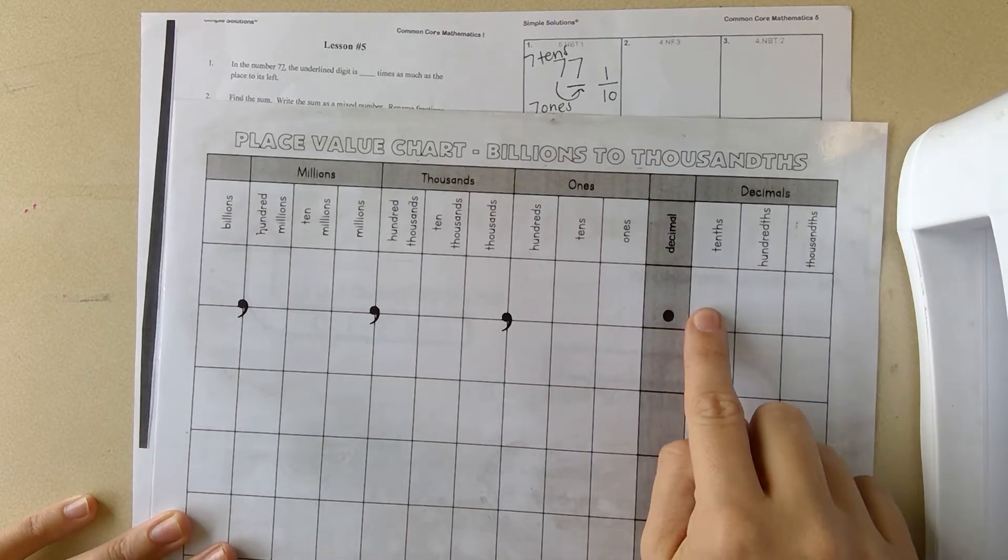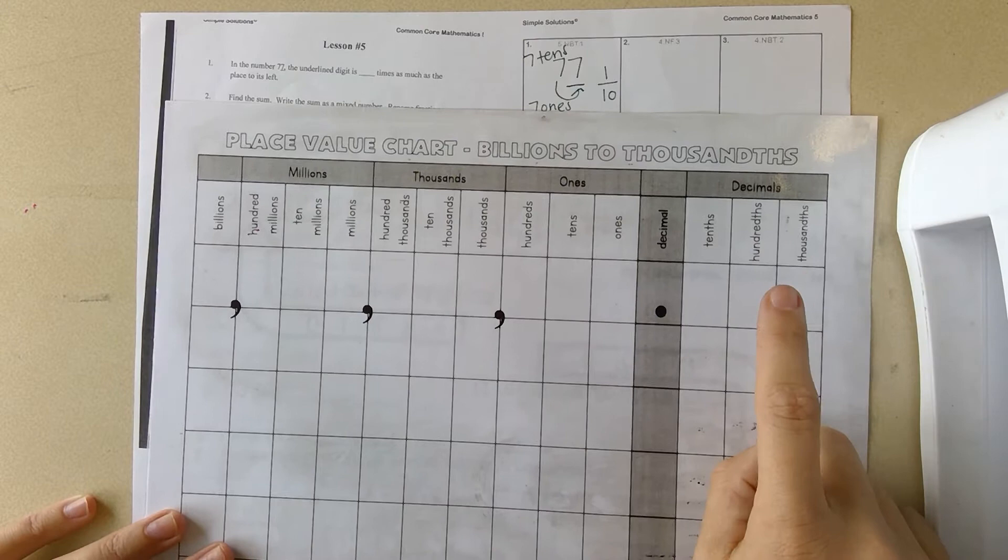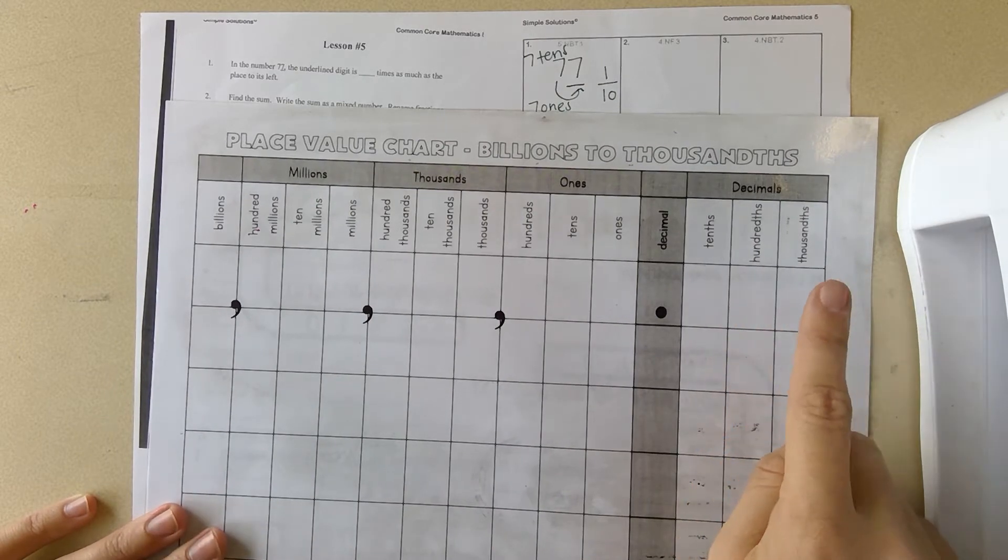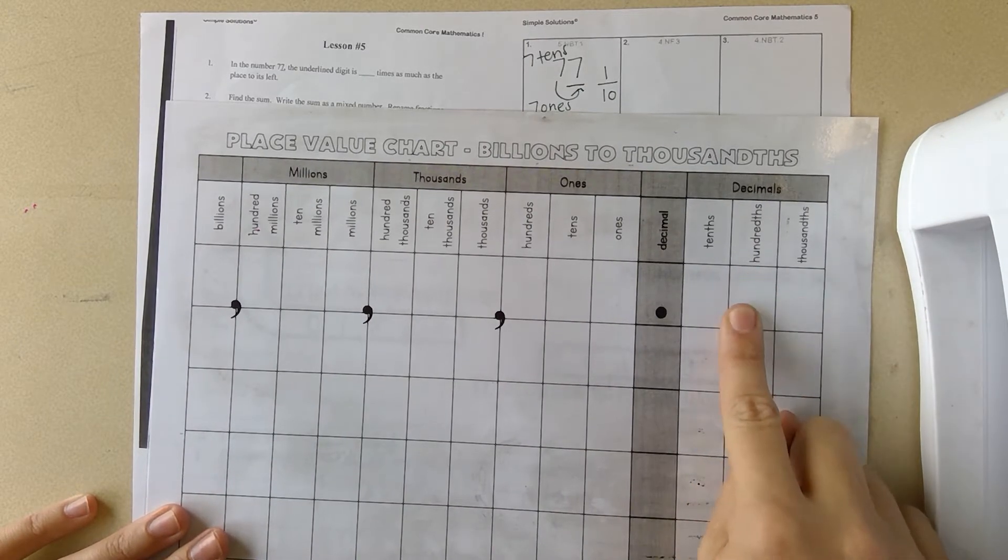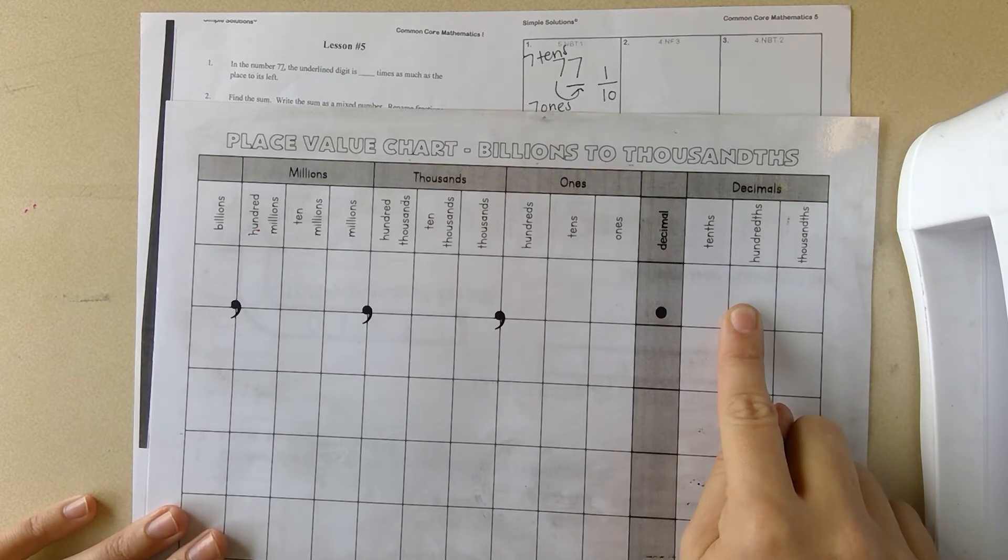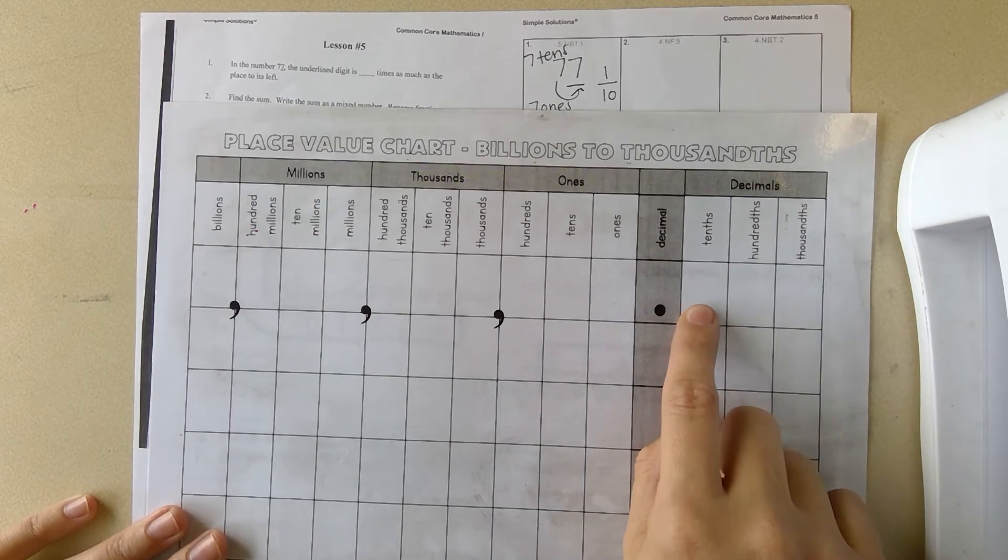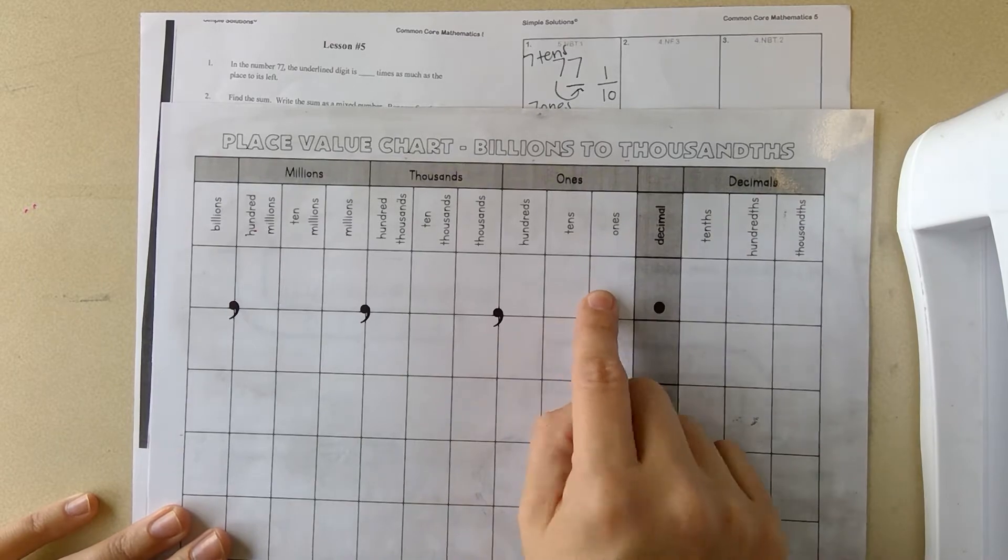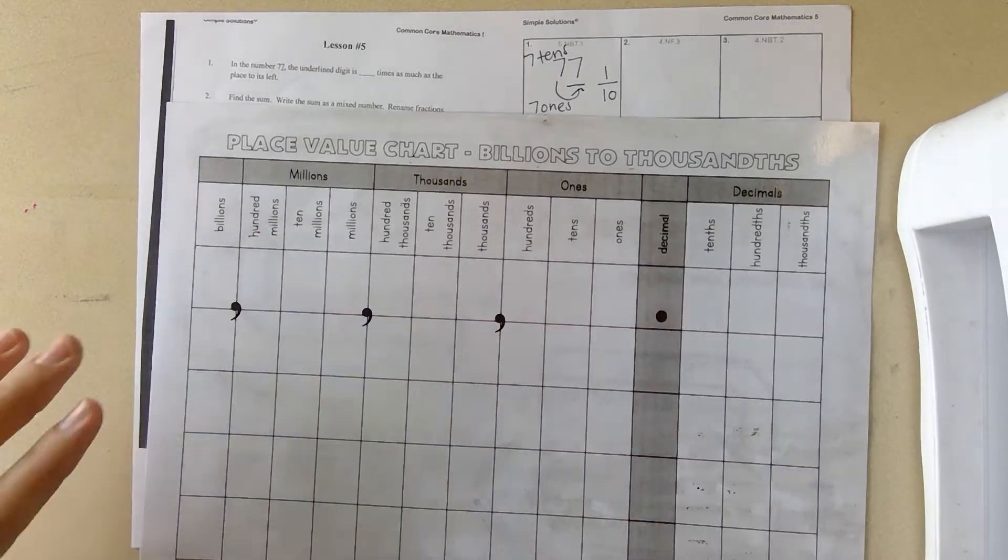A tenth times one-tenth would be a hundredth, whereas a thousandth times ten would get me to a hundredth. A hundredth times ten would be tenths. Tenths times ten would get me to the one. It depends on which direction you're going.